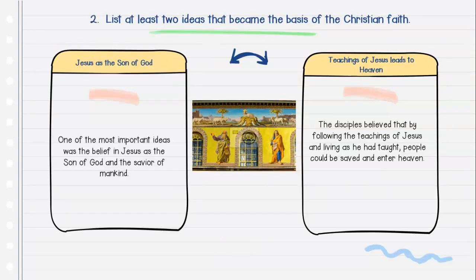Question number two: List at least two ideas that became the basis of the Christian faith. Jesus is the Son of God — one of the most important ideas was the belief in Jesus as the Son of God and the Savior of mankind. And the teachings of Jesus lead to heaven — the disciples believed that by following the teachings of Jesus and living as he had taught, people could be saved and enter heaven.